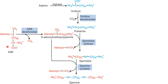S-adenosylmethionine also undergoes decarboxylation with the help of S-adenosylmethionine decarboxylase, leading to synthesis of S-adenosylmethiopropylamine. This S-adenosylmethiopropylamine then donates the aminopropyl group to putrescine, leading to the synthesis of spermidine with the help of spermidine synthase.